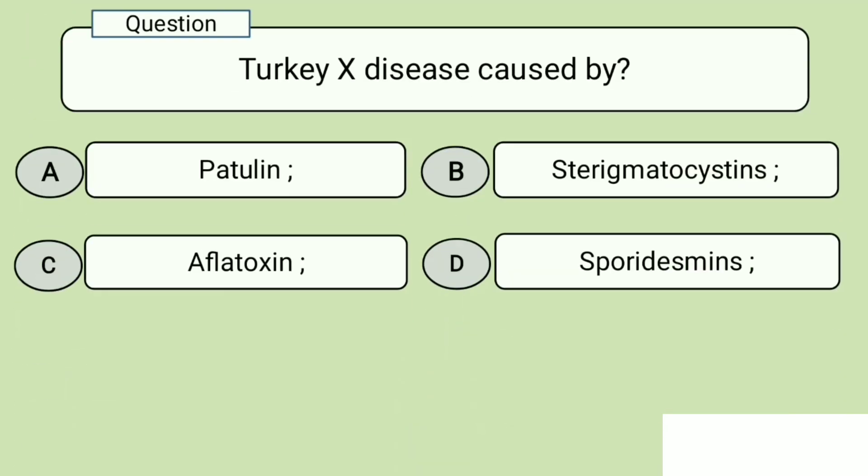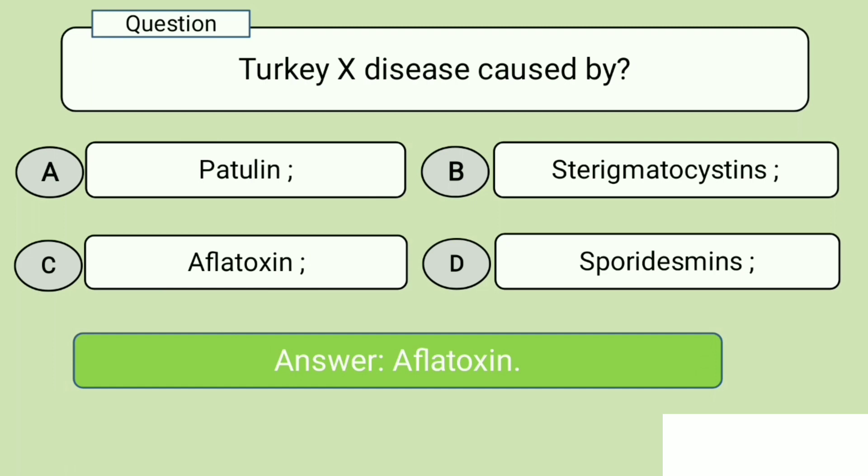Question 9. Turkey X disease is caused by. A. Patulin, B. Sterigmatocystins, C. Aflatoxin, D. Sporidesmin. Answer: Aflatoxin.